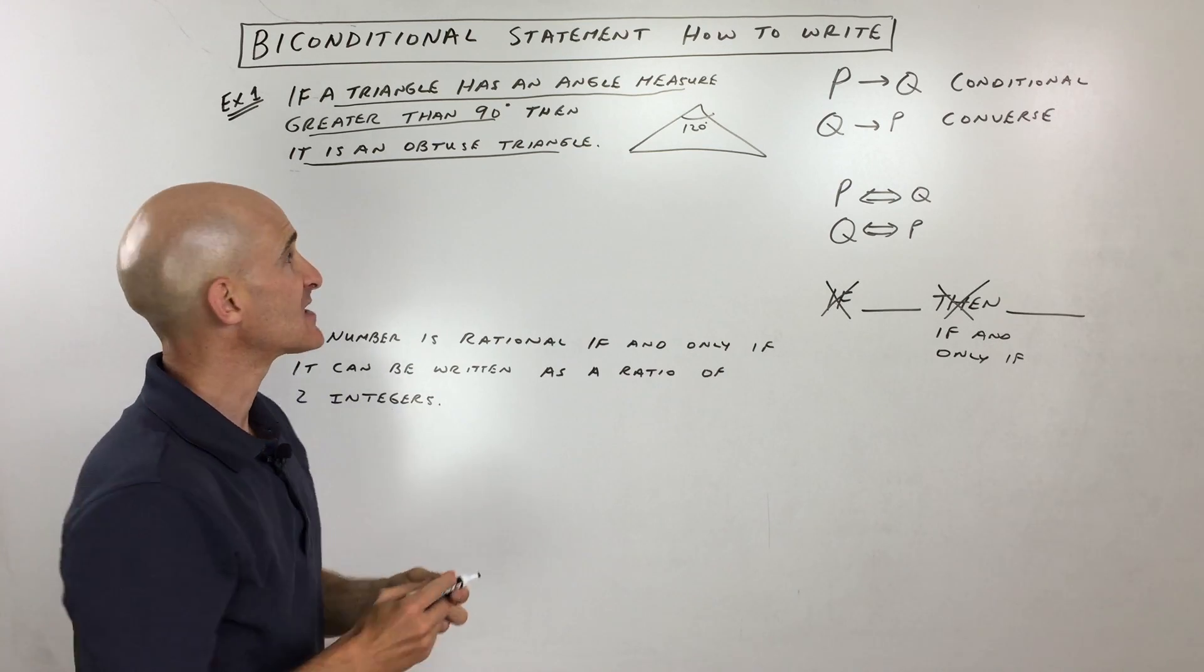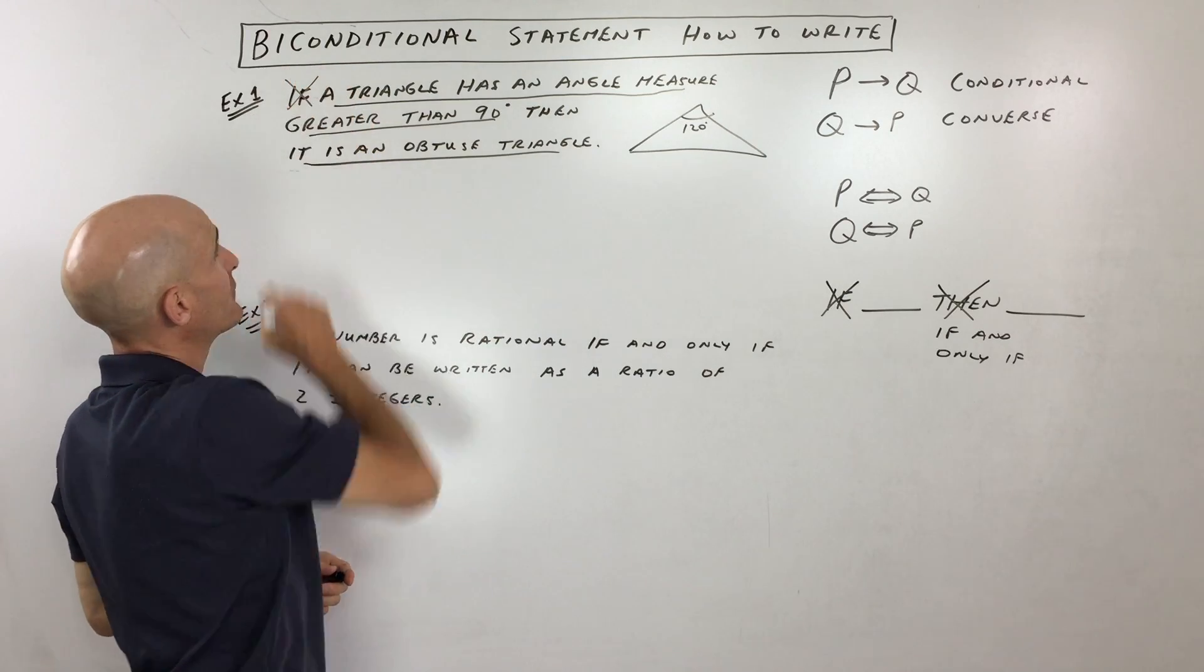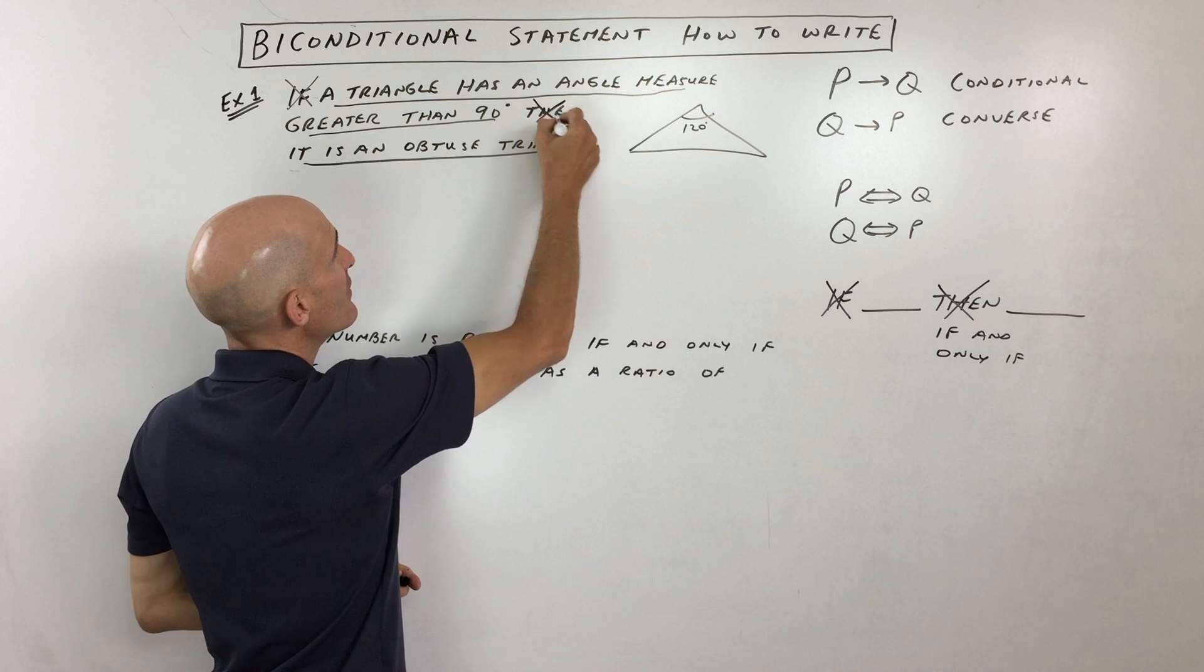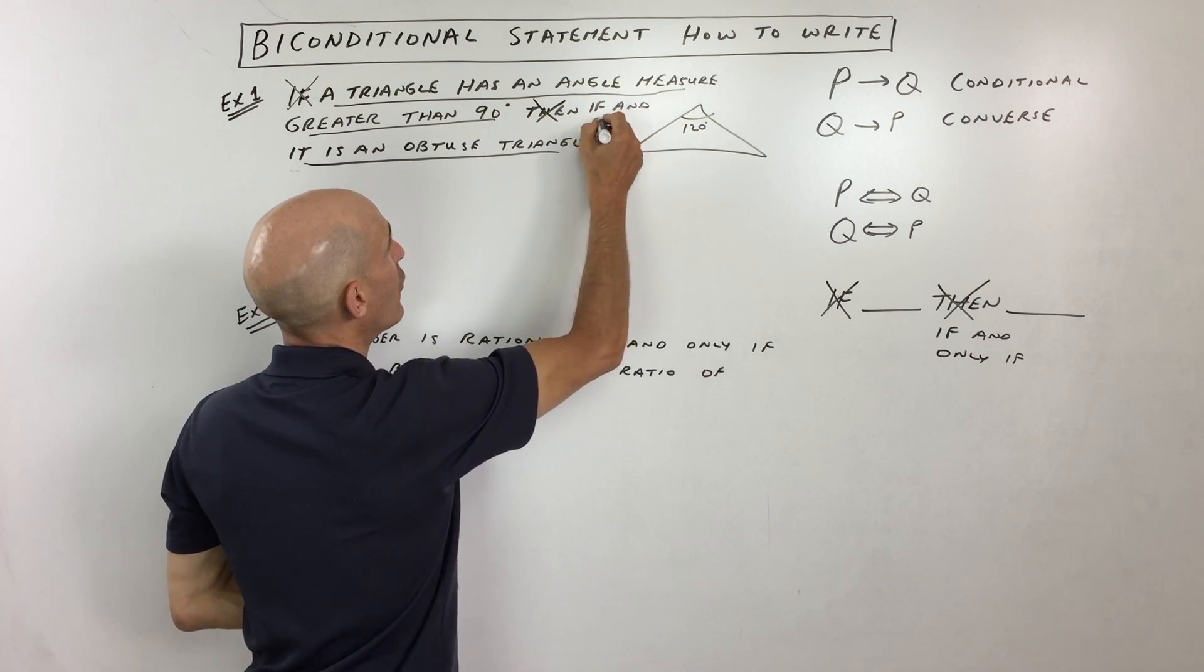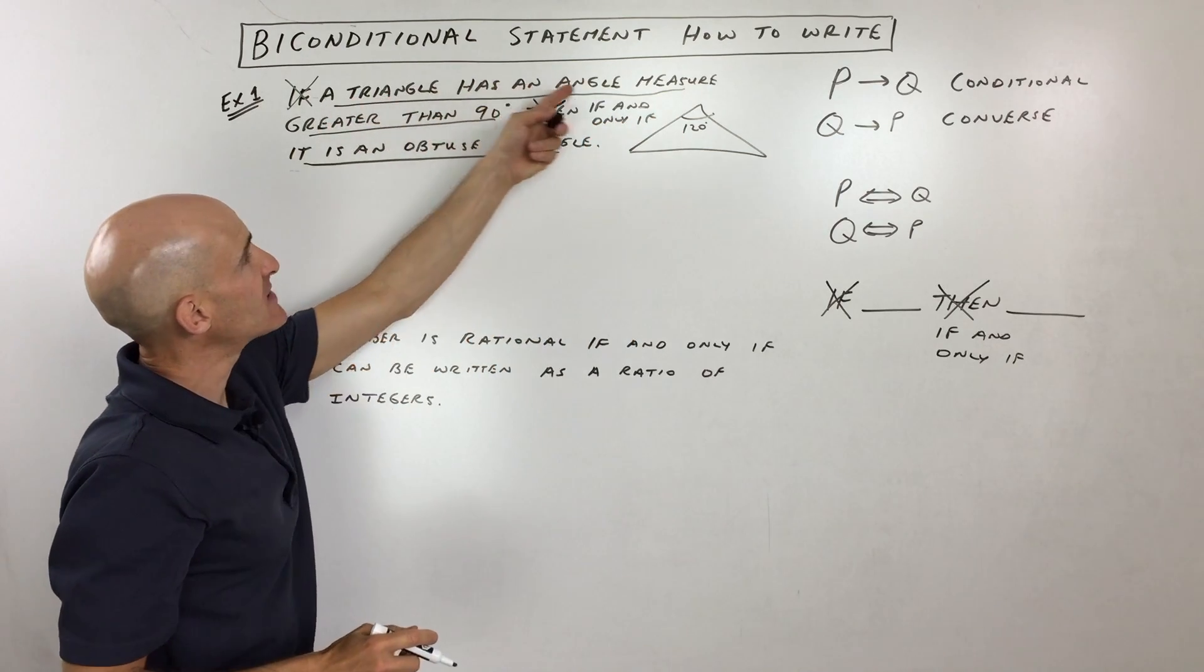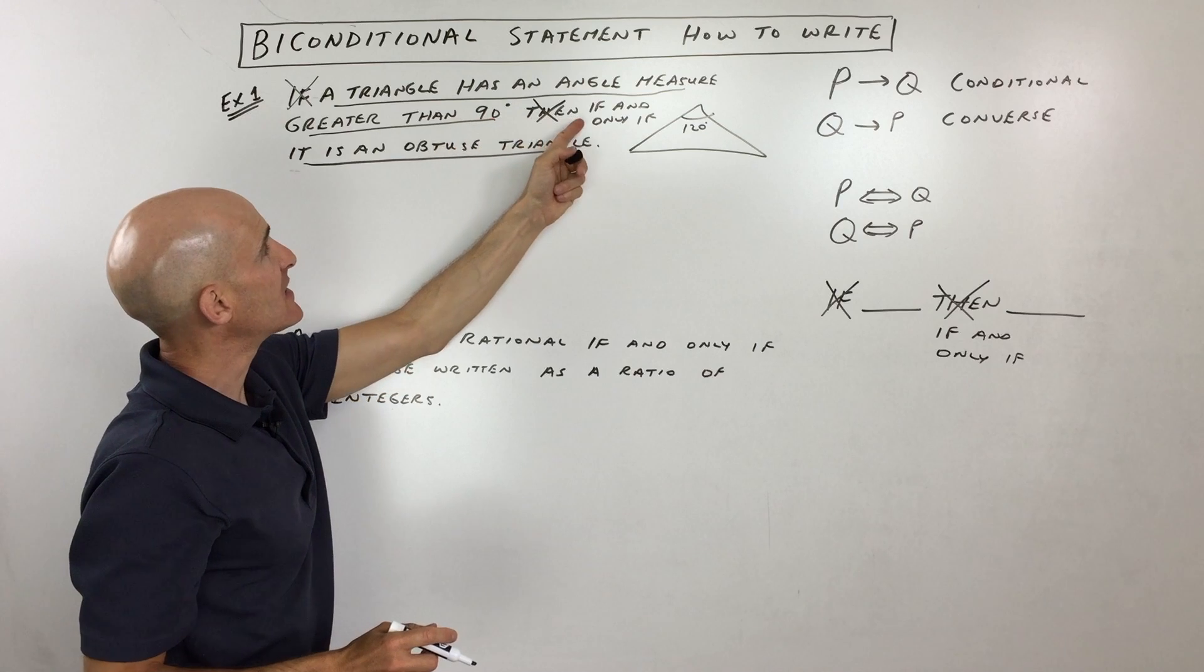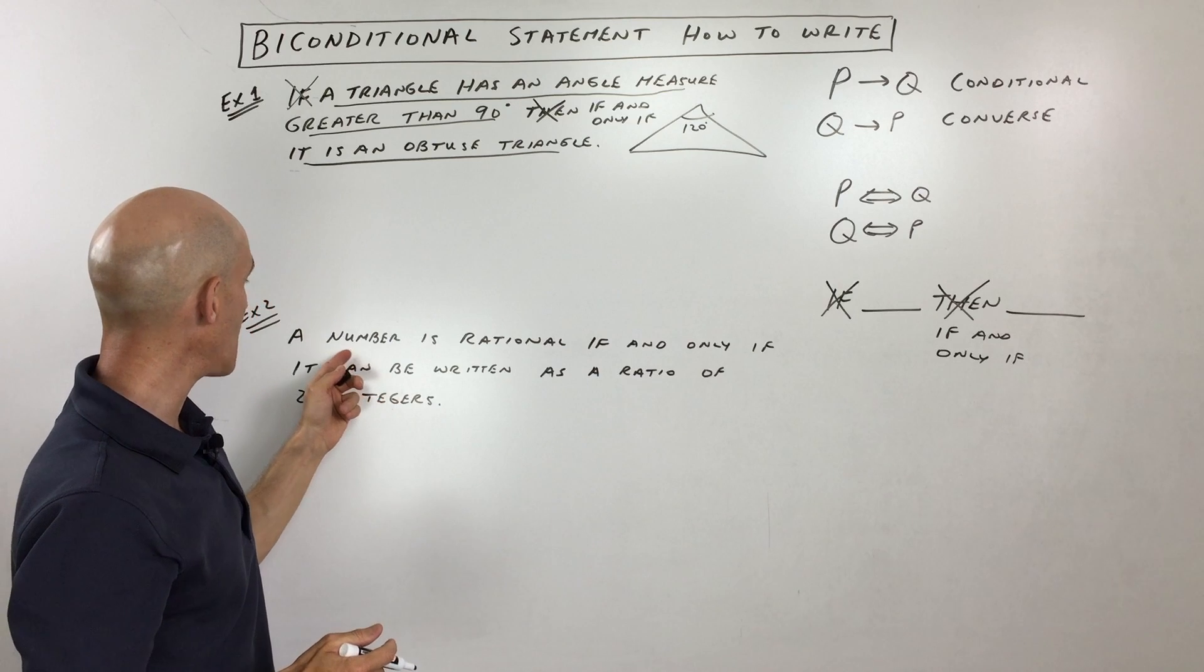So, what that means is that we can write this as a biconditional statement and here's how we're going to do it. We're going to drop the if and we're going to replace the then with this phrase, if and only if. So, here it goes. A triangle has an angle measure greater than 90 degrees if and only if it is an obtuse triangle. Let's look at a second example.